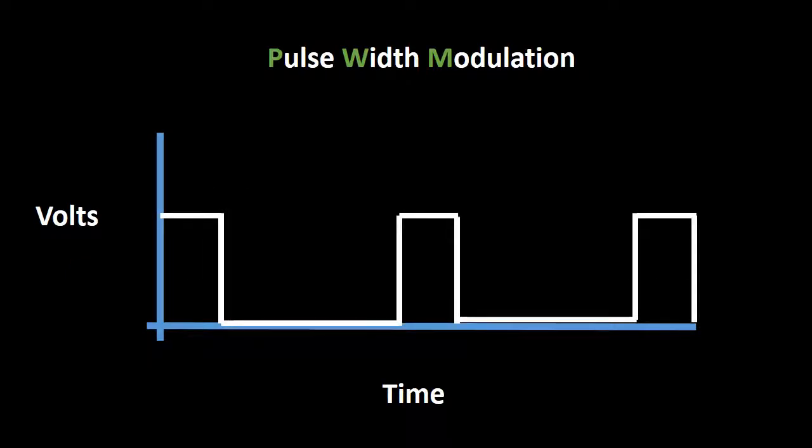If we now switch the DC voltage on for only a quarter of the time, and off for three quarters of the time, our average would now be a quarter of the DC input.